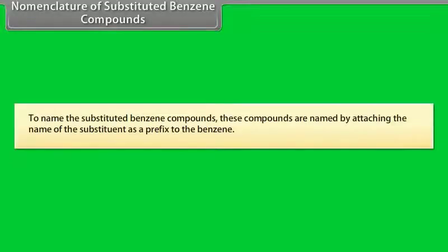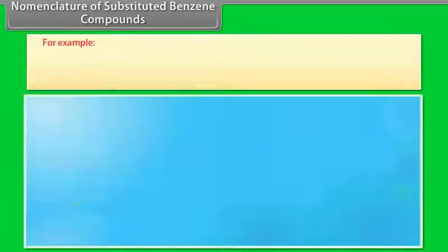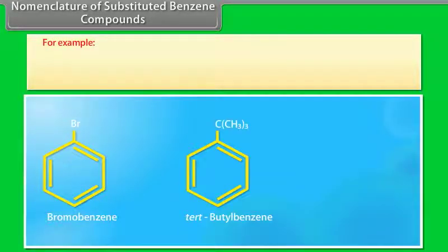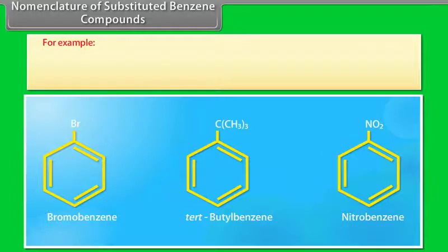Nomenclature of substituted benzene compounds. To name substituted benzene compounds, the name of the substituent is attached as a prefix to benzene. For example: bromobenzene, tert-butylbenzene, nitrobenzene.